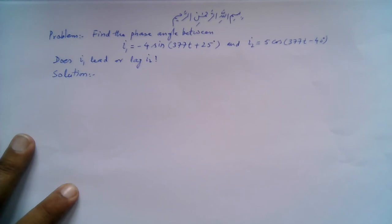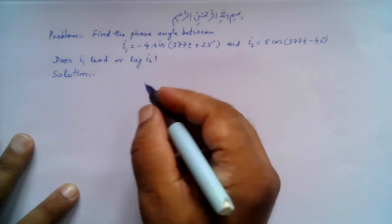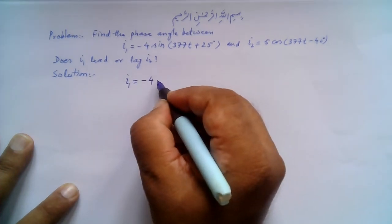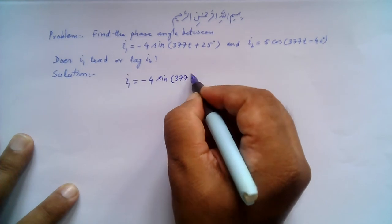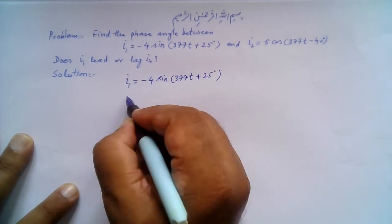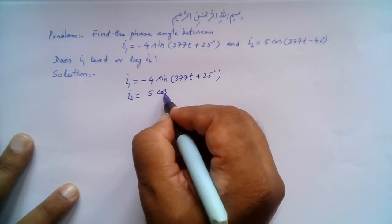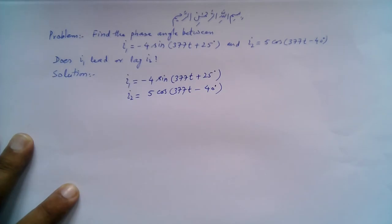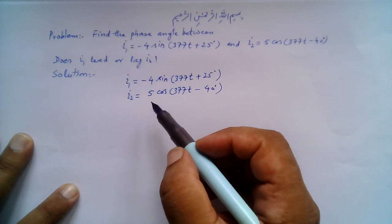Bismillahirrahmanirrahim. We have a problem: find the phase angle between i1 = -4sin(377t + 25°) and i2 = 5cos(377t - 40°). Does i1 lead or lag i2? So we have two sinusoids here: i1 = -4sin(377t + 25°) and i2 = 5cos(377t - 40°). For comparison to take place, it must fulfill three conditions.